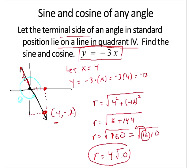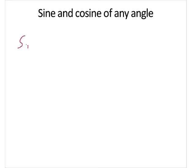So there's my r. I've got an x of 4 and a y of negative 12. I think I'm ready to write out the sine and the cosine of that angle. So sine of angle theta should be y over r. So we'll have negative 12 over 4 times the square root of 10. Well, 4 goes into 4 one time and negative 12 three times. So we'll wind up finally here with negative 3 over the square root of 10.